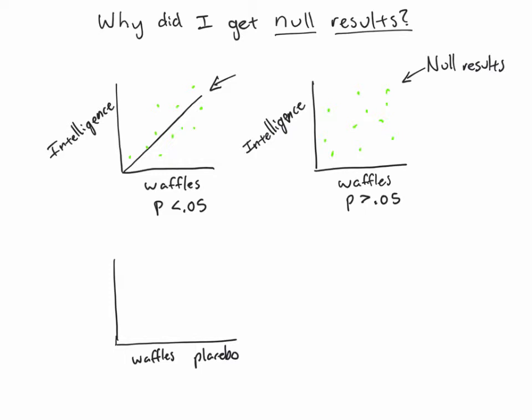Your hypothesis is that you are going to find that the group that receives waffles, if you were to measure their intelligence, the people who eat waffles are going to have a statistically significantly higher intelligence than the people who took the placebo. You get a difference here, and it's statistically significant.